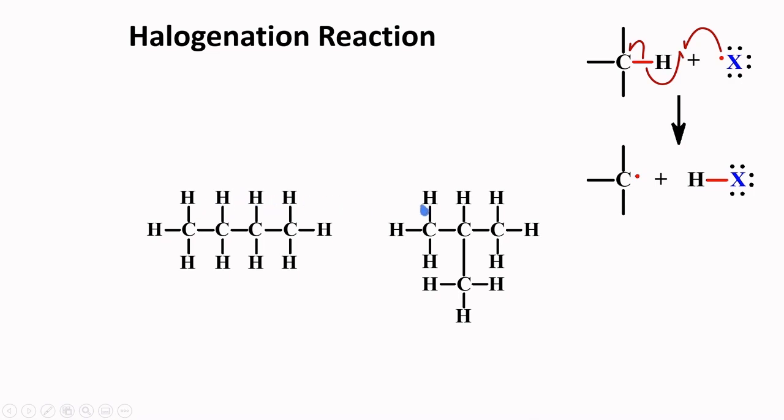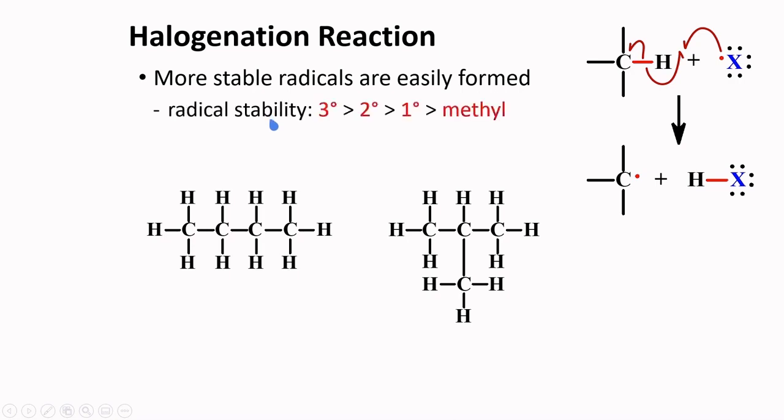Similarly, for 2-methylpropane, this hydrogen is similar to this one and also similar to this one. Again, there are two types of hydrogens here, a tertiary hydrogen and a primary hydrogen. Fortunately, we know that radicals are not created equal. Depending on the type of carbon, some radicals form rather easily. We now know that tertiary radicals are more stable than secondary radicals, which are more stable than primary radicals, and the methyl radical is the least stable. Thus, for butane, this type of radical will form very fast. For this branched alkane, this tertiary radical is more likely.